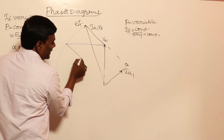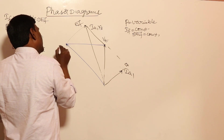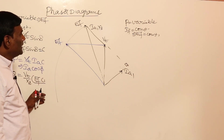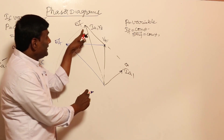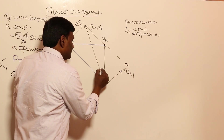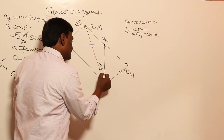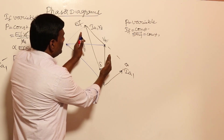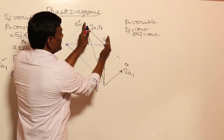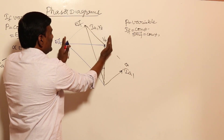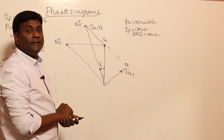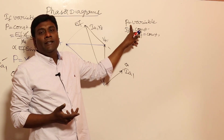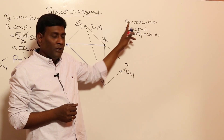If EF moves from the first position to a second position, EF sin delta increases. EF sin delta increased means active power P increases. Output power is P = Vt × Ia × cos φ, and since Vt is constant, Ia cos φ must increase as well.